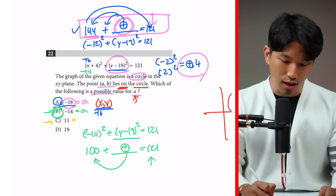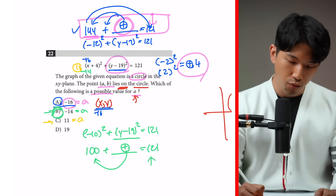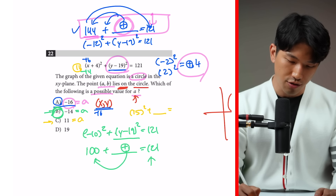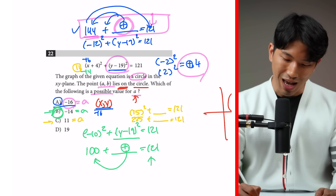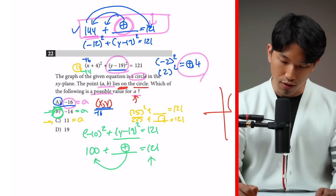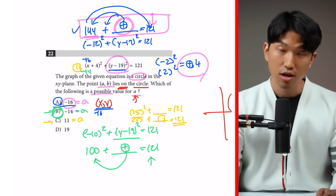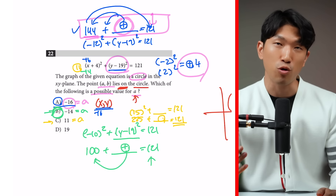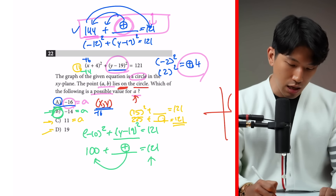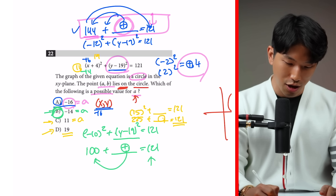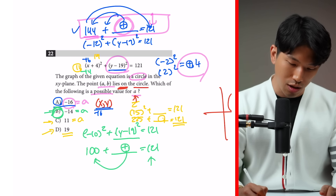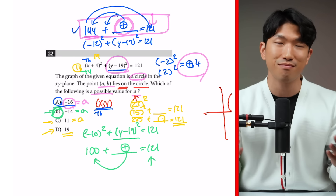For choice C, A equals 11: plugging in gives 15 squared, which is 225, plus the second half. We'd need to subtract something to reach 121, which is impossible since the squared term is always positive. Similarly for choice D, plugging in 19 gives 23 squared, which is even larger. Neither C nor D works.